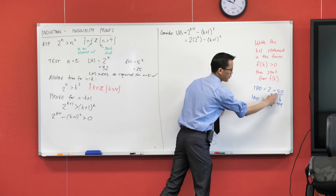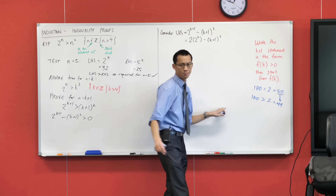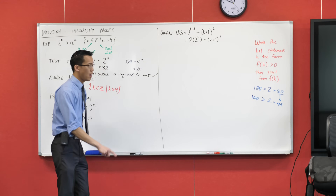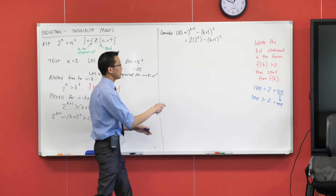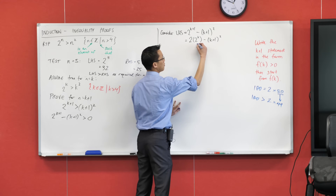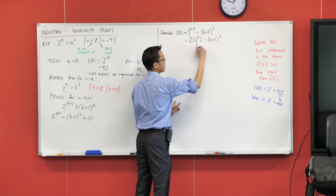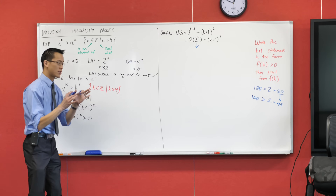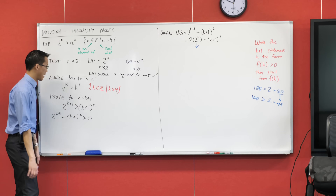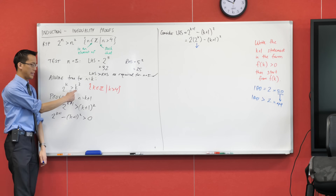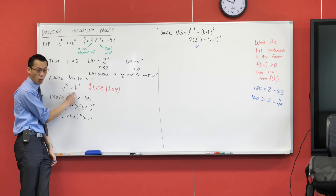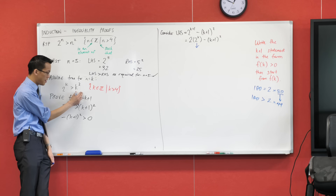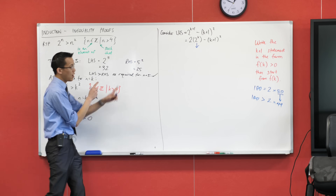See how I substituted 50 for 49, which made this thing smaller. What I'm going to do is substitute 2 to the k for something that I know is smaller than that, namely k squared. You see 2 to the k is bigger than k squared, so this guy's smaller.